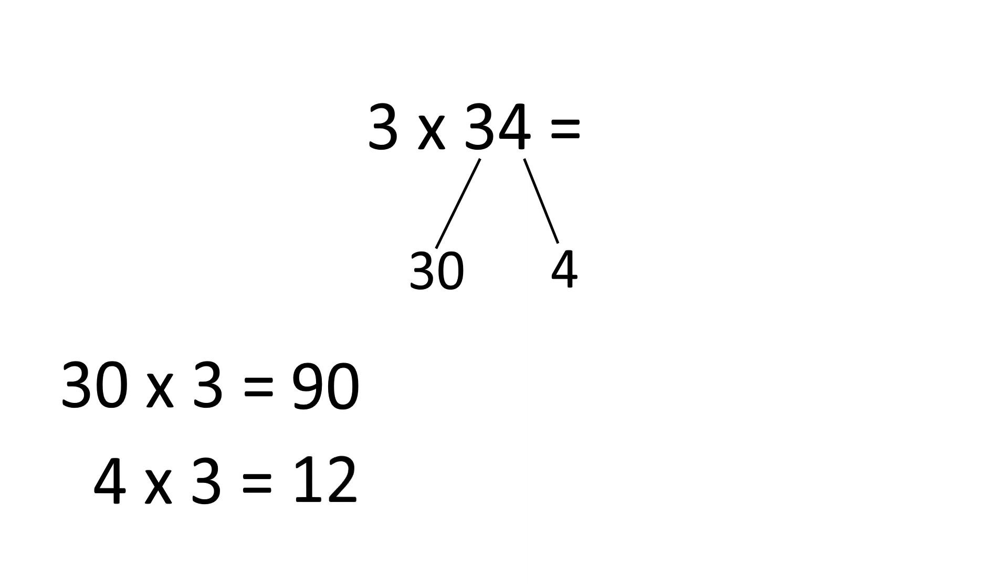Now, we must add these two answers together. 90 plus 12 is equal to 102. Therefore, 3 times 34 is equal to 102.